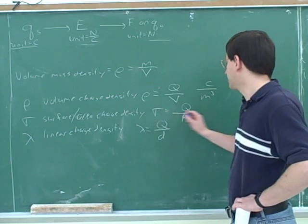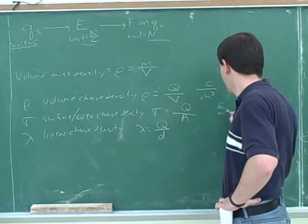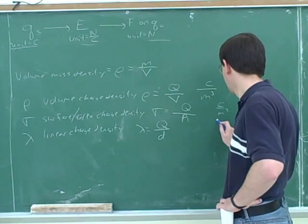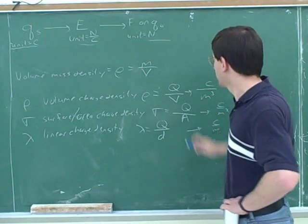By the way, then what would be the units going back to sigma? The units for sigma would be? Coulombs per meter squared. And the units for this would be? Coulombs per meter. Right.